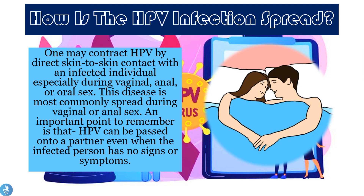How is the HPV infection spread? One may contract HPV by direct skin-to-skin contact with an infected individual, especially during vaginal, anal, or oral sex. This disease is most commonly spread during vaginal or anal sex. Importantly, HPV can be passed on to a partner even when the infected person has no signs or symptoms of the disease.